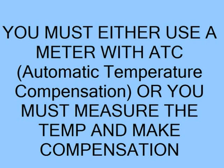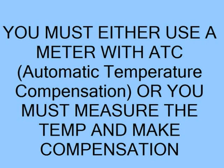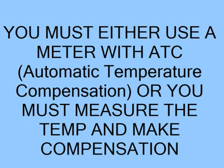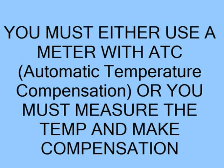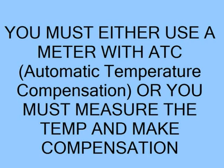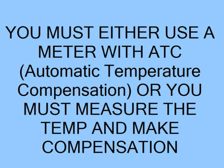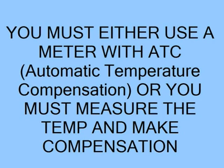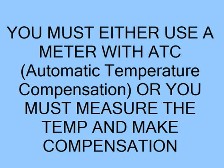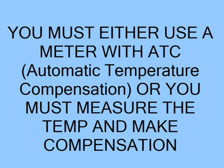Human urine comes out of the body at about 37 degrees centigrade — 100 degrees Fahrenheit — and temperature affects conductivity. So you're either going to have to cool the sample to room temperature, 68 degrees, rather quickly, or you're going to have to have a way to compensate for that elevated temperature.